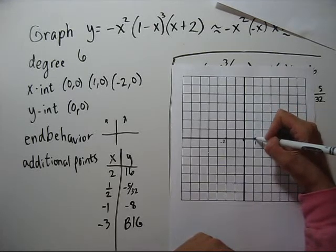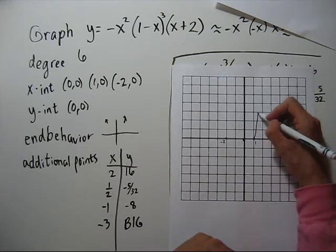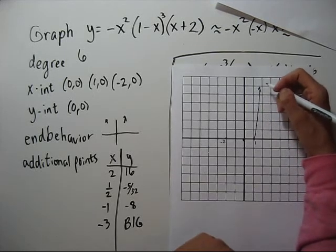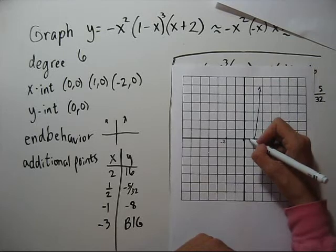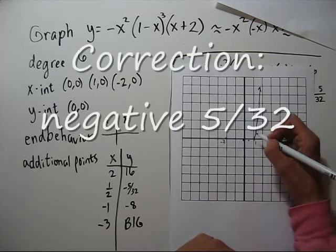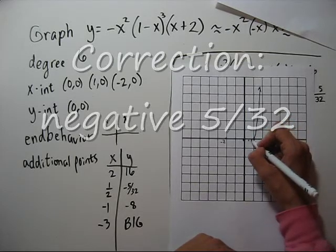If you want it to be more precise, you could put in one point five. Now one half is five thirty seconds, which is not very far down. So we're going to go like that.